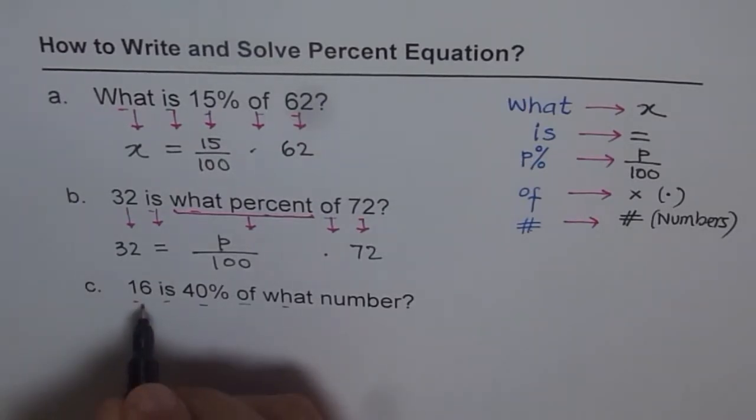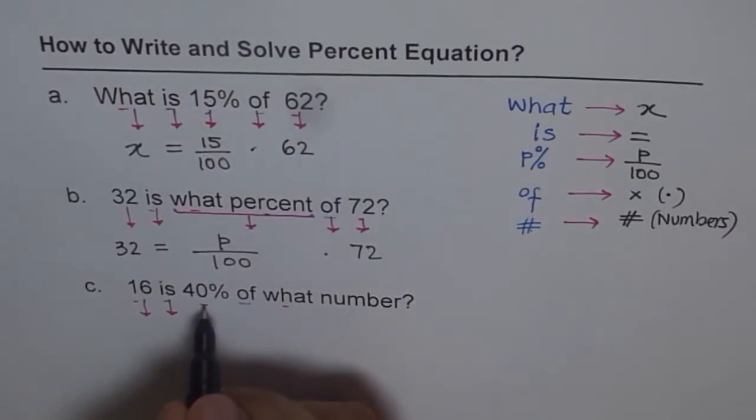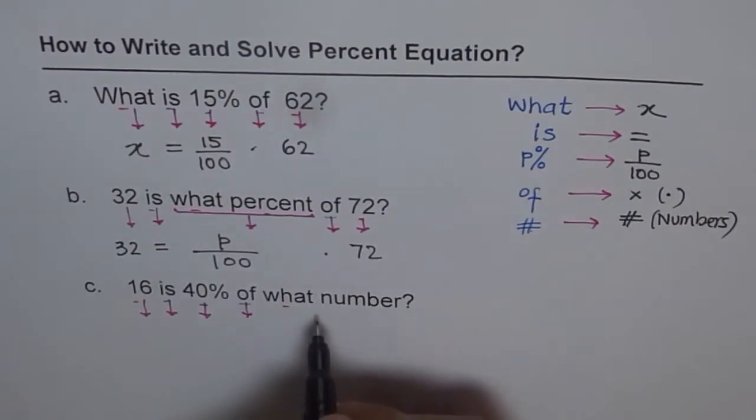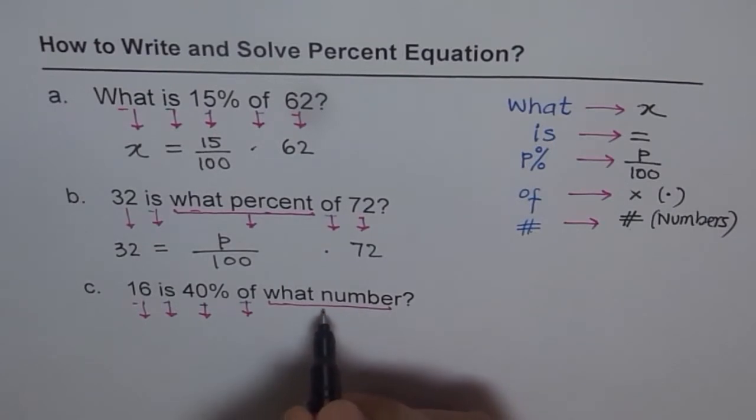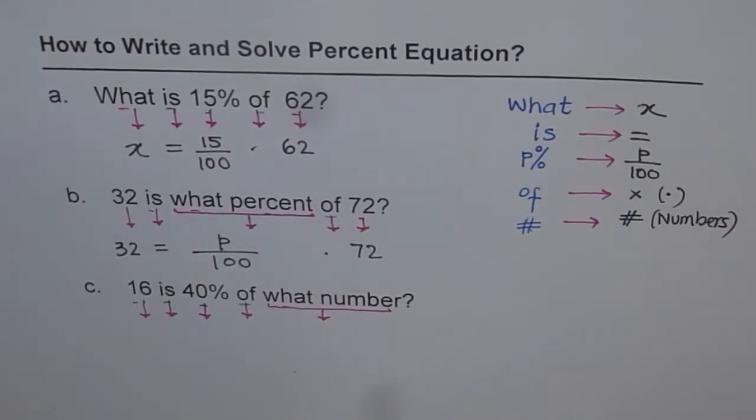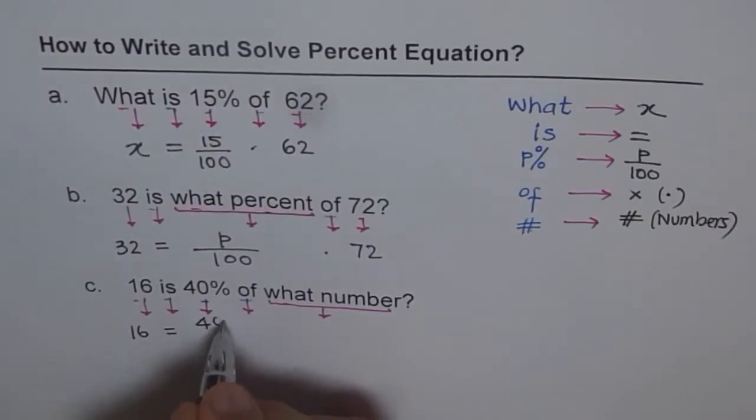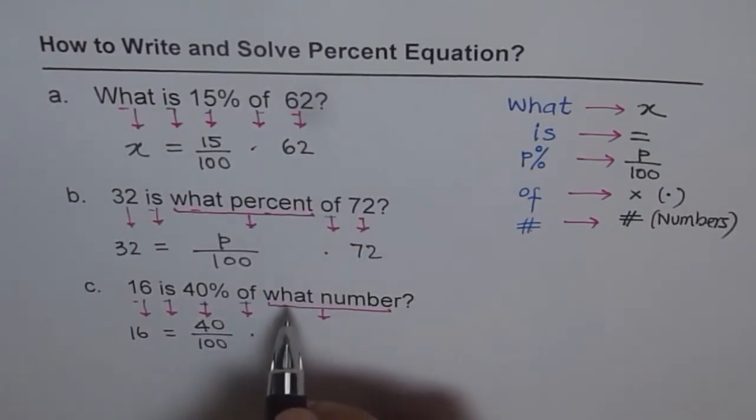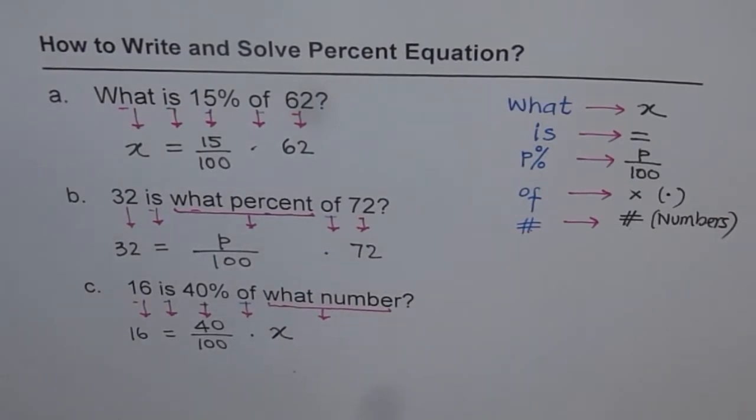Next one, let's do it again. 16 is the number, is equal to, 40 percent is 40 over 100. Of is a multiplication sign. What number? This time we are asking about what number. We don't know, we'll put X for it. So we get 16 equals to 40 percent means over 100, of means multiplication, what number? We don't know, X.